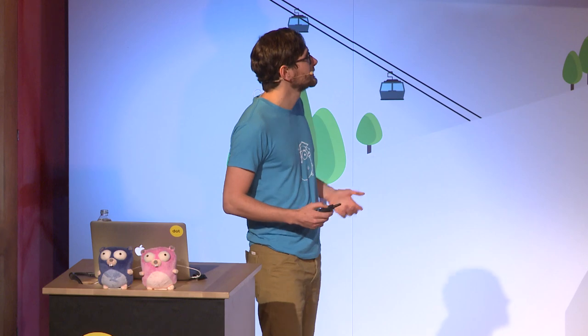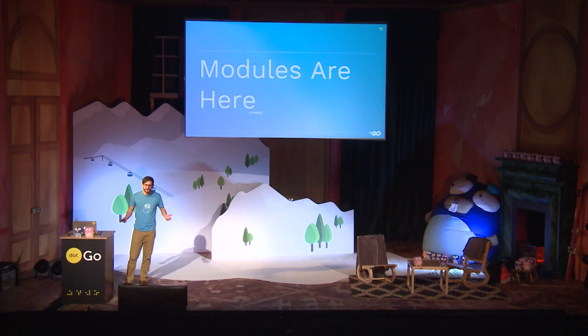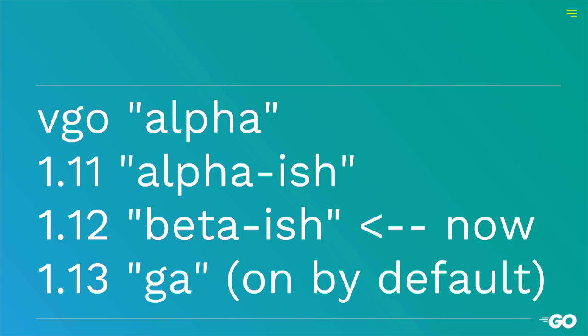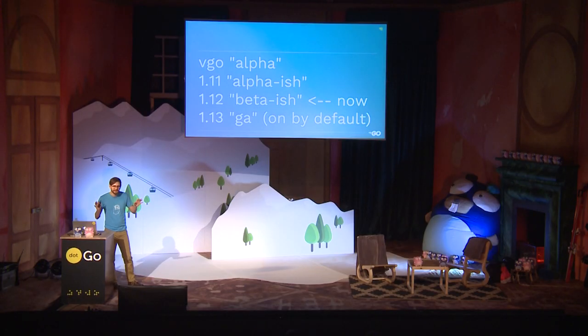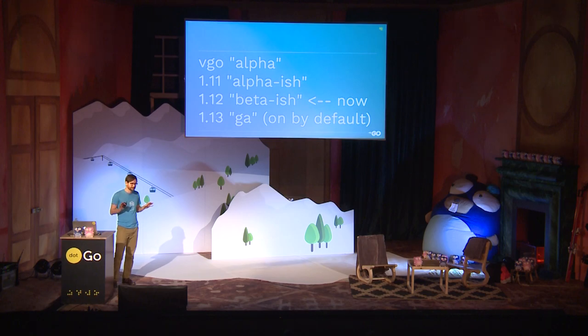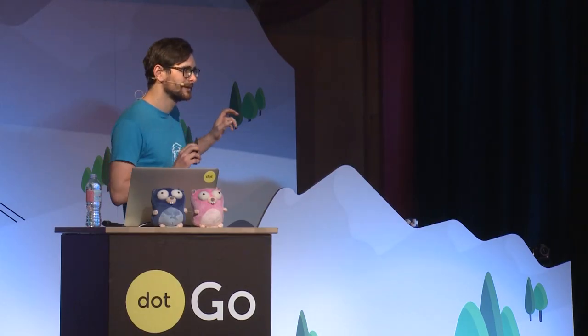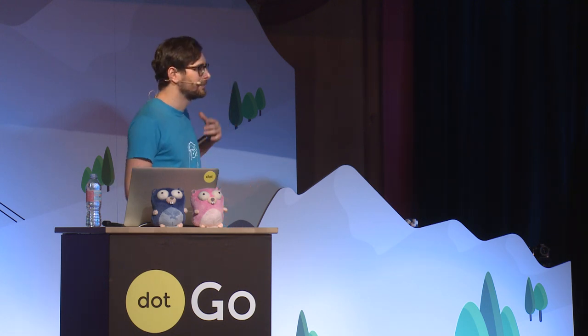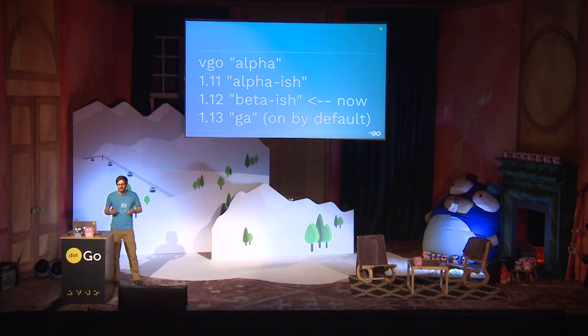Modules are finally here — mostly here. We started with this experiment called VGO, and it was successful, so they rolled it into the Go toolchain as GoMod. In 1.11, I like to think of it as a very alpha state. They had a couple of main use cases flushed out, and over time the bugs decreased, but it was a little rough for some library maintainers. By 1.12, where we are now, it's in a much better state.